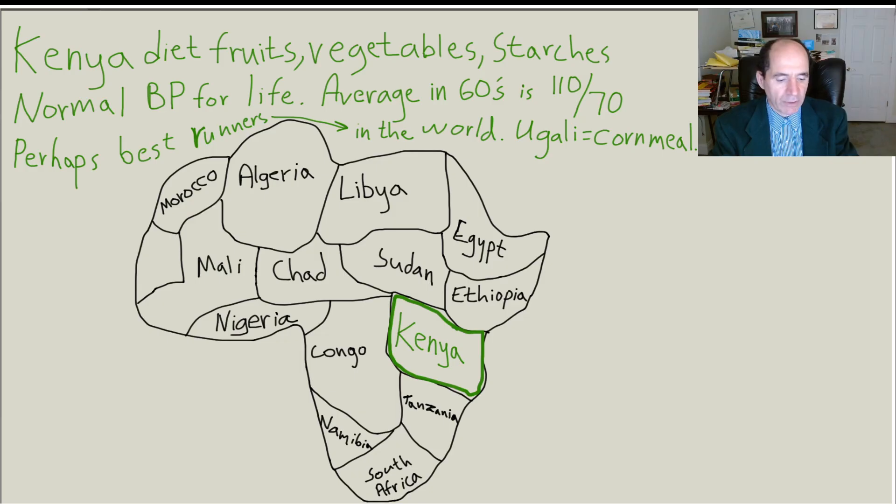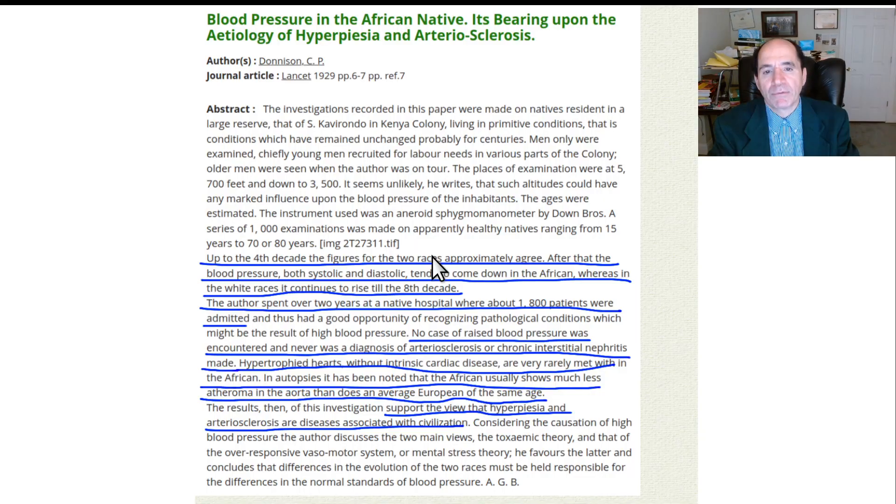So one of the things I want to show you that I thought was pretty interesting. Here's a paper from 1929 in the Lancet Journal, author Donison, about hypertension in Kenya. 1,800 consecutive admissions to a hospital, not a single case of raised blood pressure. So I thought that was funny. So their hypertension is not a genetic thing. It's an environmental thing.